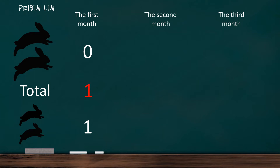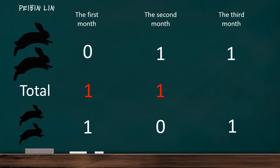After a month, the pair of newborn rabbits grew into a pair of adult rabbits, while the pair of newborn rabbits went to zero, and the total pairs of rabbits remained one. In the third month, all the rabbits of the previous month have become adults. At the same time, the adults from the last month produce a new pair of rabbits. Now the total pairs of rabbits is two.